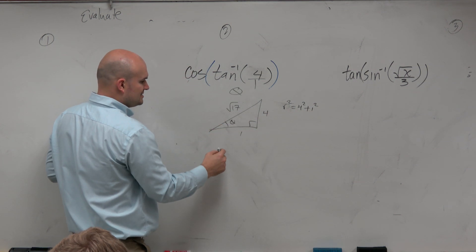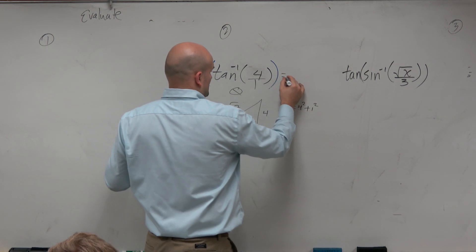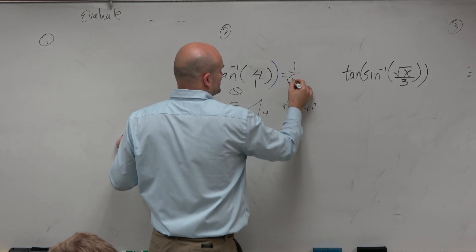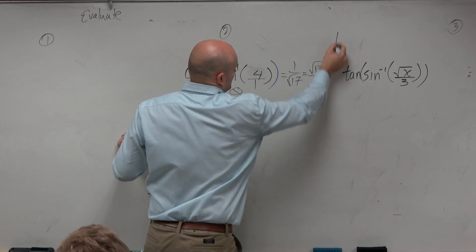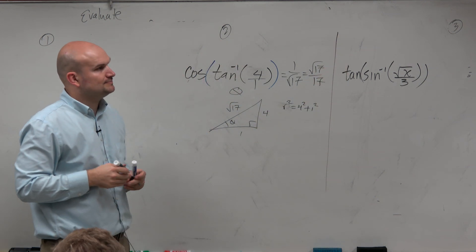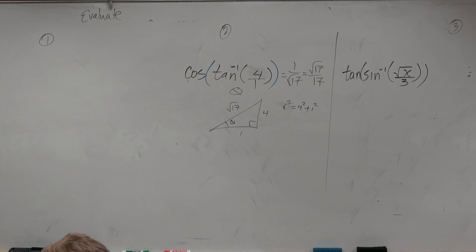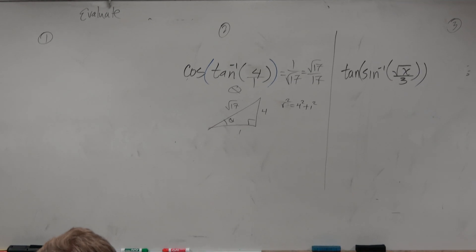So the cosine is equal to 1 over the square root of 17, or in simplified form, square root of 17 over 17. Now, let's look at one that's a little bit more abstract, and I'll probably get cut off.